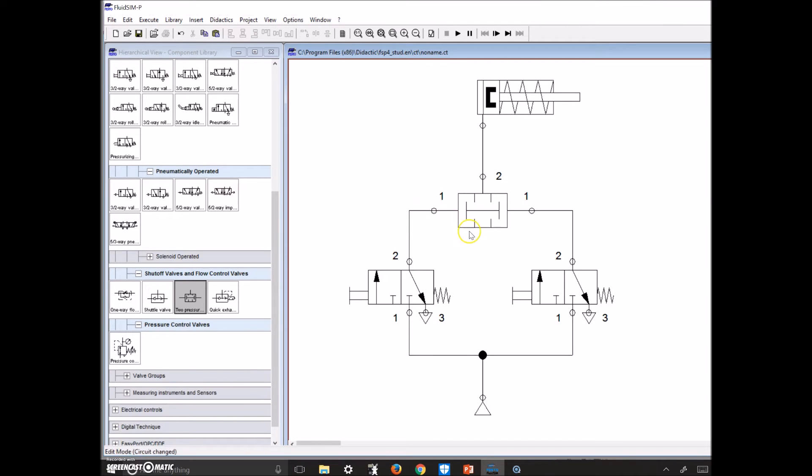Okay, so from the previous lab this is exactly what we had set up. So all we need to do is just grab this bad boy, take it out and then replace it with the shuttle valve. So let's grab this guy right here. It's in shutoff valves and flow control valves.